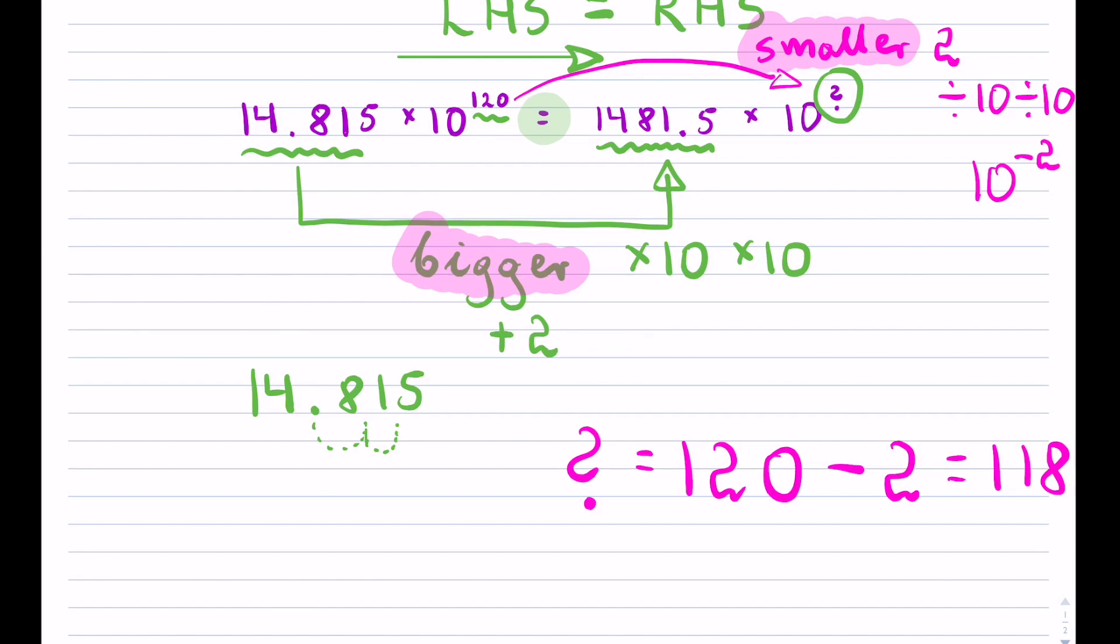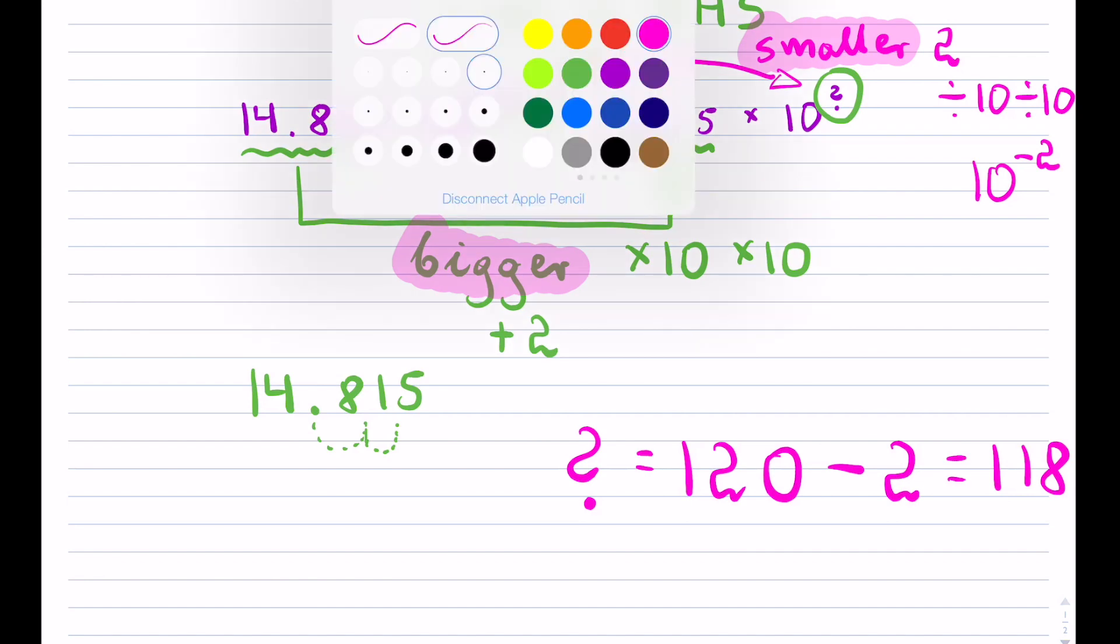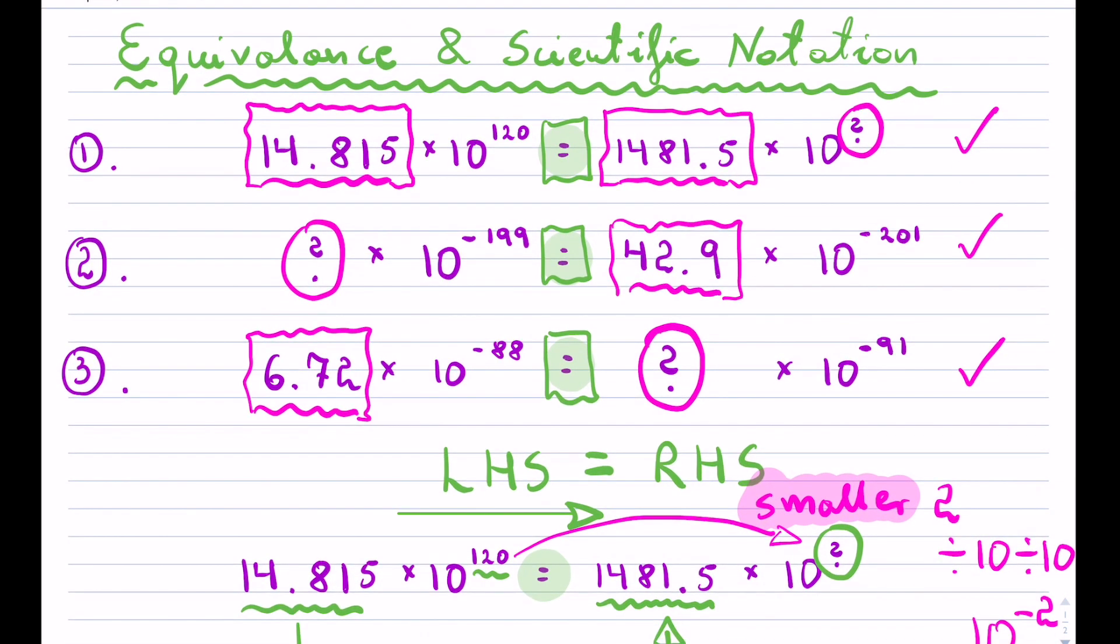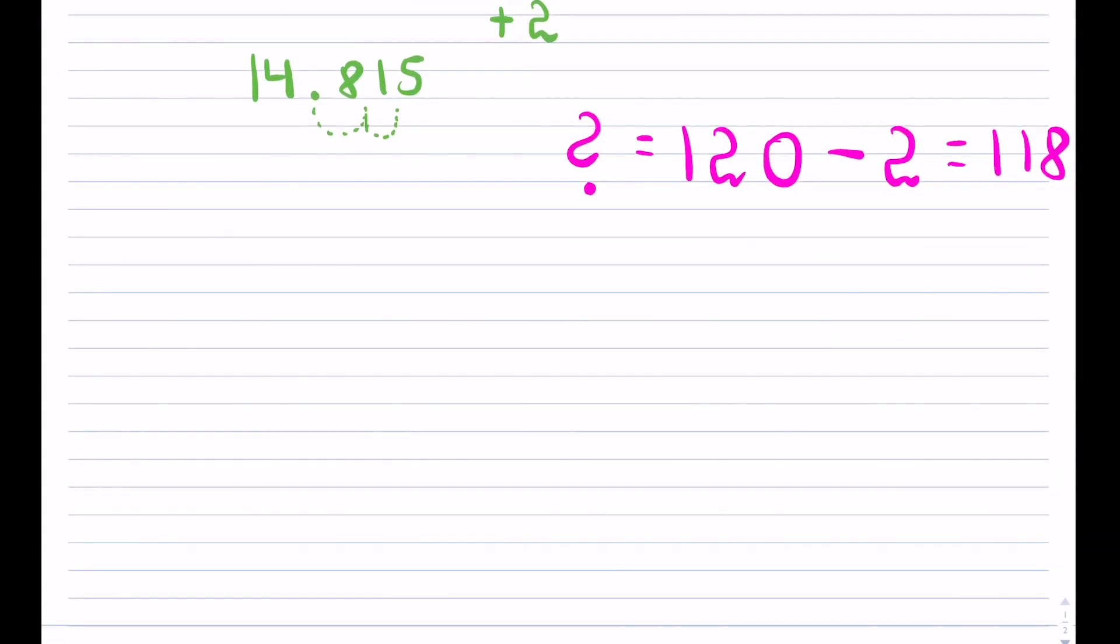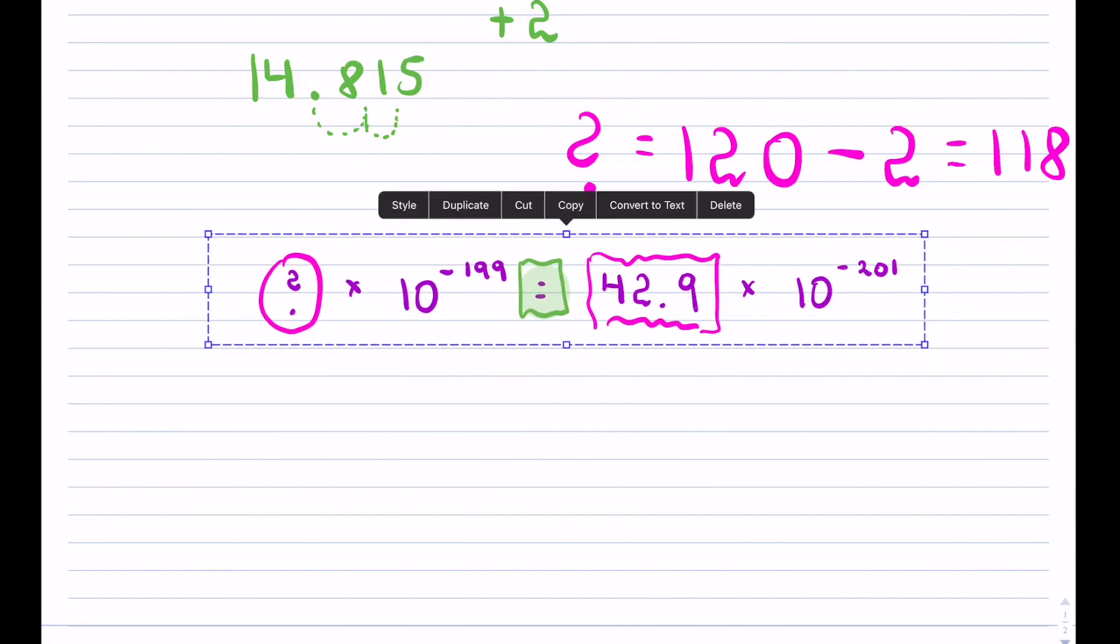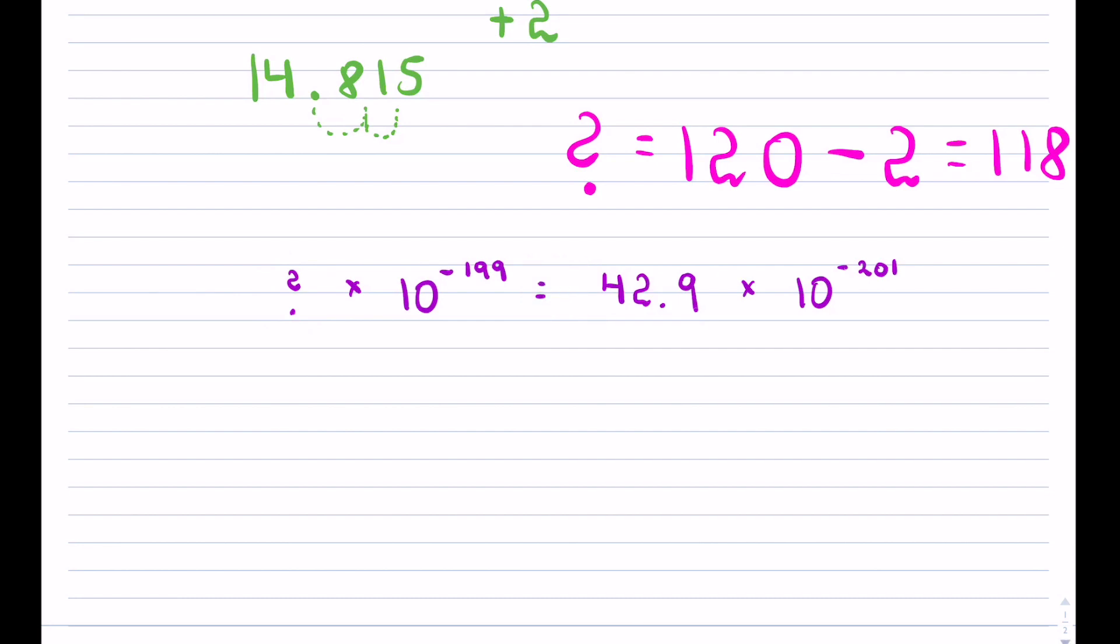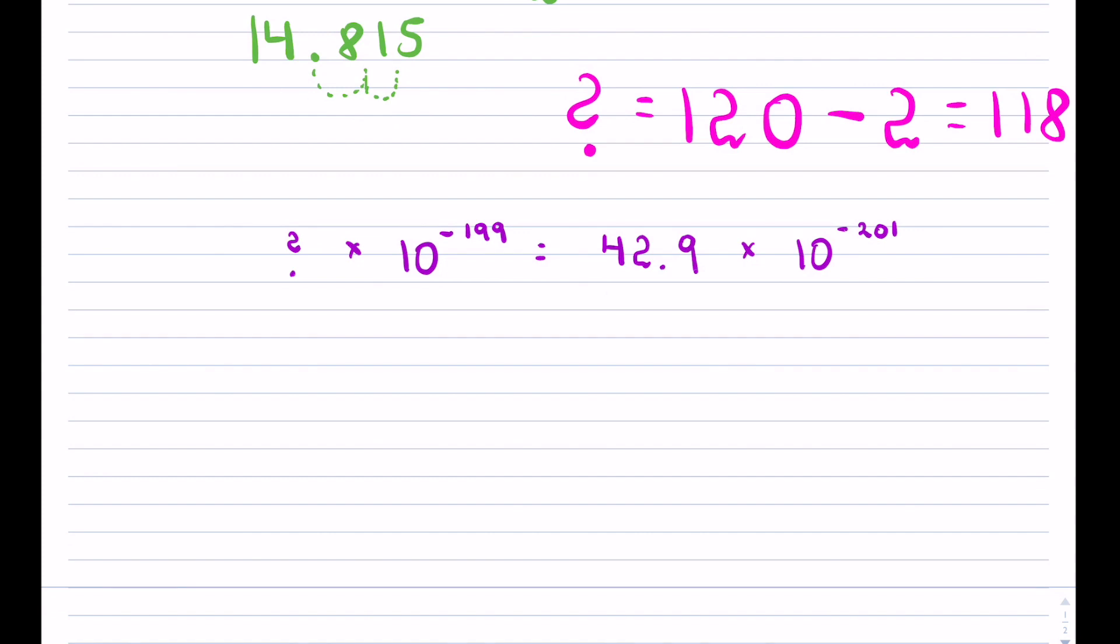Let's try it on the second example to hopefully make it a little bit easier to understand. That's my second example. Now I notice I have everything on the right-hand side and my question mark is on the left-hand side. So the direction I'll be moving is to the left.